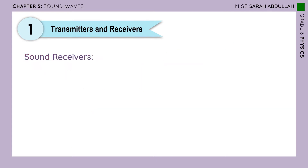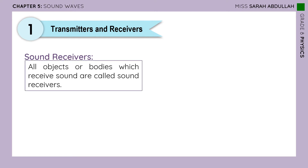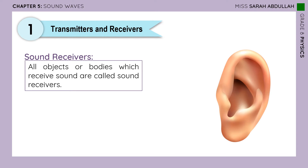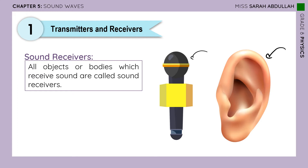Now, how about sound receivers? They are the objects or the bodies which receive sound. Like I'm talking right now and you guys are hearing me — you are receiving the sound through your ears, so ears are sound receivers. We have another sound receiver which is the microphone; we speak into it and it receives our sound. We also have other sound receivers like sensors that work on sound.